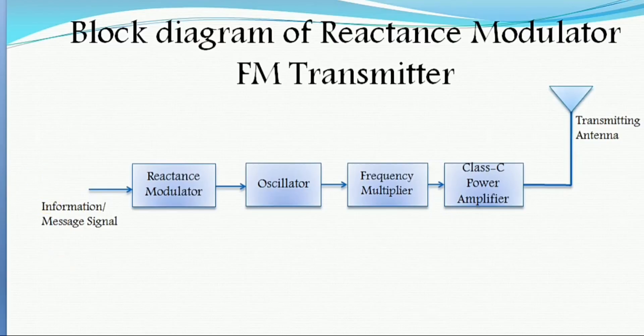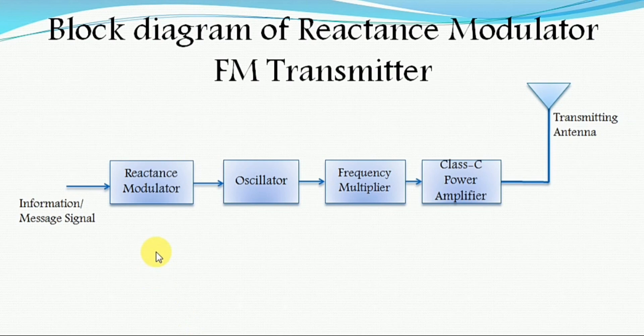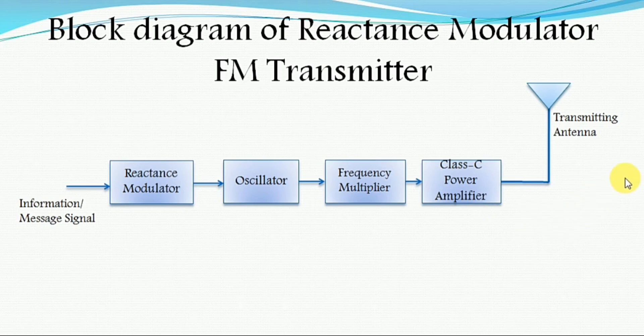It mainly consists of four blocks. One is the reactance modulator, the second is an oscillator, the third is the frequency multiplier, and the fourth is the class C power amplifier, which is thereafter connected to a matching network. From the matching network, the signal is transmitted through the transmitting antenna.